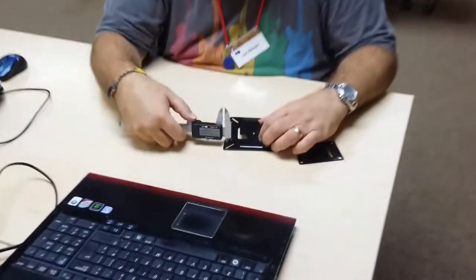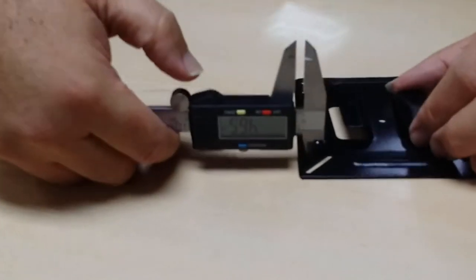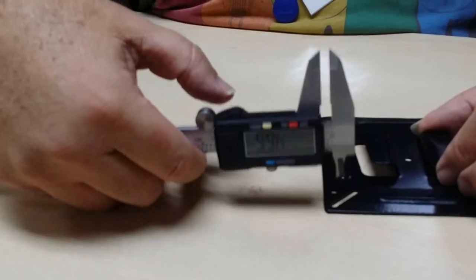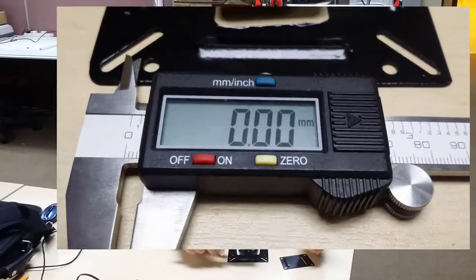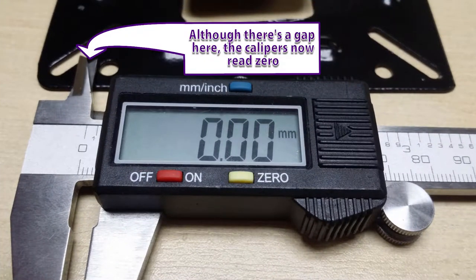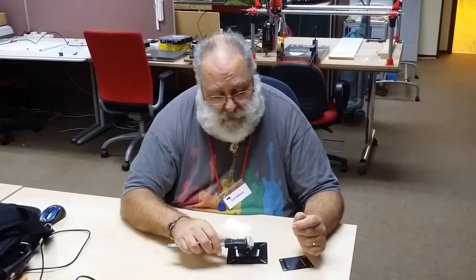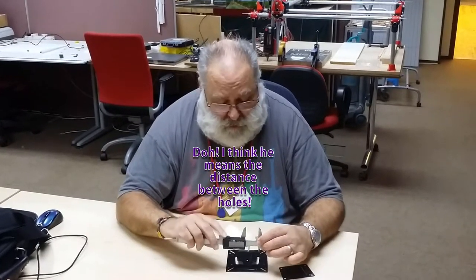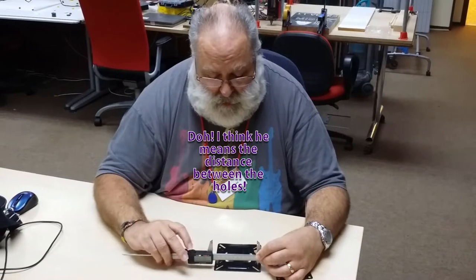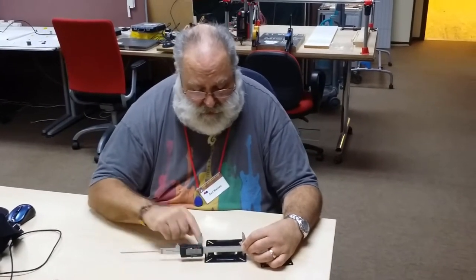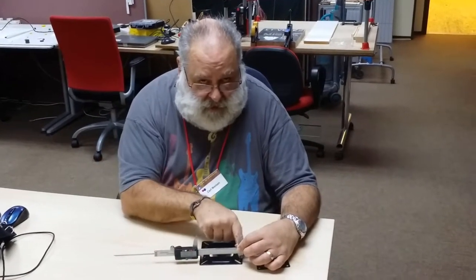Instead of just measuring the hole—you can see that says 4.6 millimeters—you zero it, and then measure the full length from the outside of this hole to the outside of that hole.